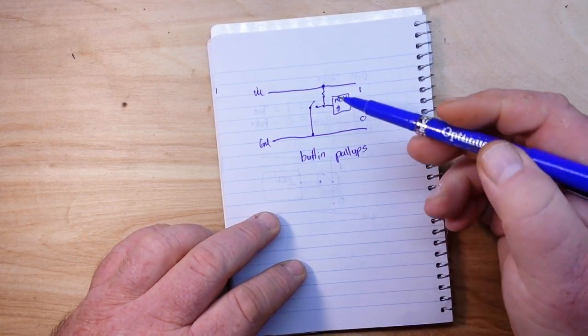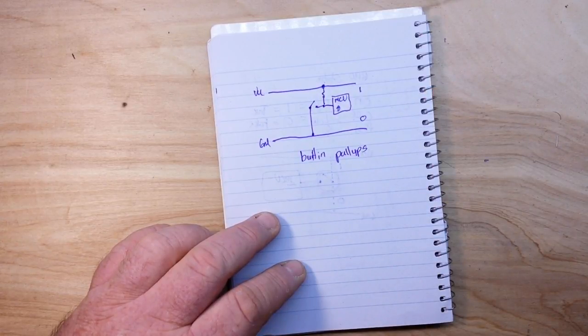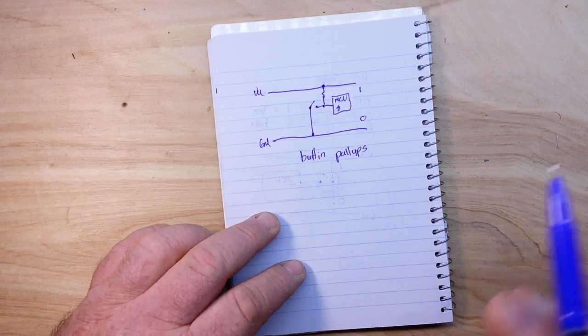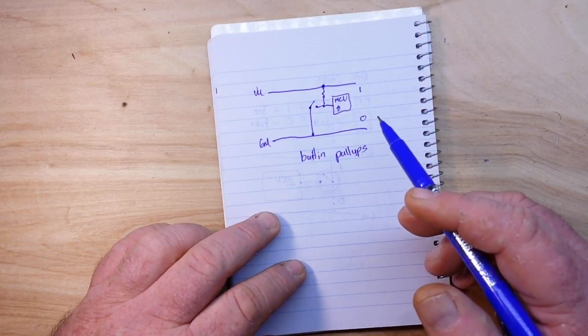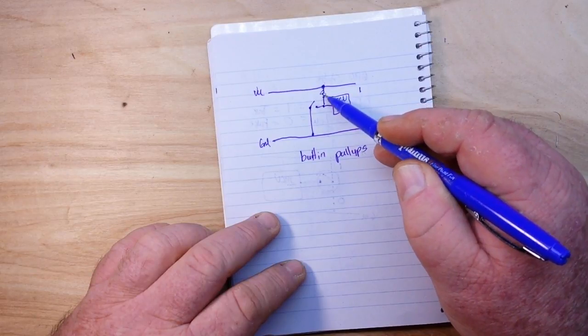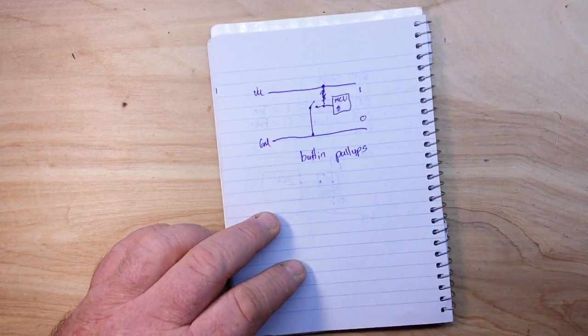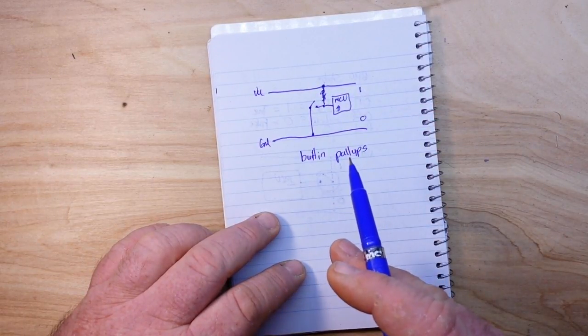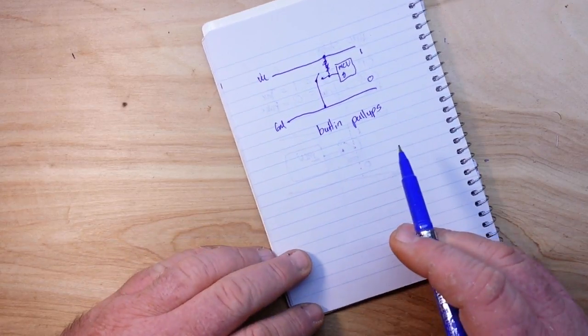So you actually don't need to use a pull-up resistor in most cases. And you can just connect your switch to ground, and the pin will read high when it's disconnected, as long as when you declare it,